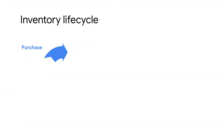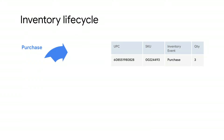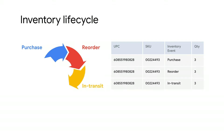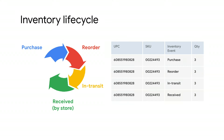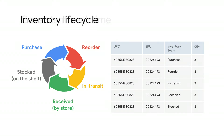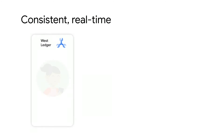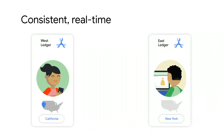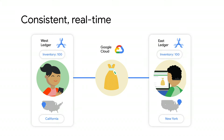Whenever an inventory event happens, it's placed in an append-only immutable event ledger. This guarantees inventory changes are recorded in the system consistently across multiple regions. As customers buy items across different channels — in-store or mobile — Spanner gives them a consistent view of inventory no matter what region or channel the shopper comes from. All replicas of the inventory ledger are kept up-to-date, in-sync, and quickly available.